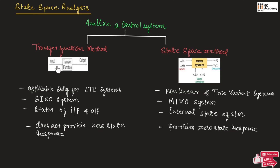In the transfer function method, an input is given to a system with some transfer function. And depending upon the transfer function of the system, we will get the output, which means the output is linear with respect to the input.